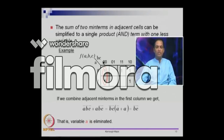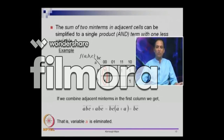When we combine two adjacent ones, it knocks out one variable. In this case b and c are constant — we stay in the same column but go across multiple rows, and those row variables get eliminated. Doing the same thing for another column: this term is a̅bc̅, this one is abc̅, and combining them gives bc̅. The last column corresponds to bc̅.